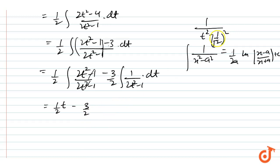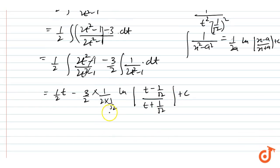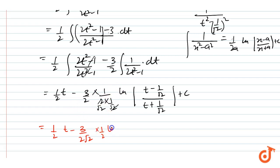Applying this standard form with a equals 1 over root 2, we get one half times t minus three halves times 1 over 2 times 1 over root 2 times log of (t minus 1 over root 2) over (t plus 1 over root 2) plus c. This simplifies with the factor of 1 over 2 root 2.